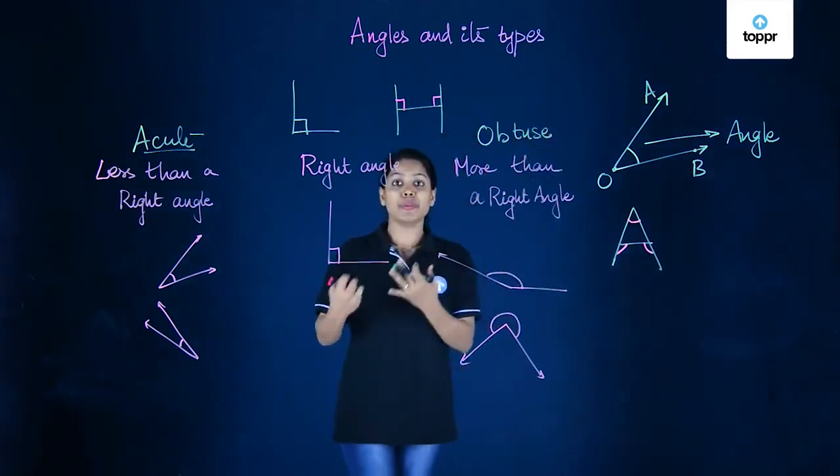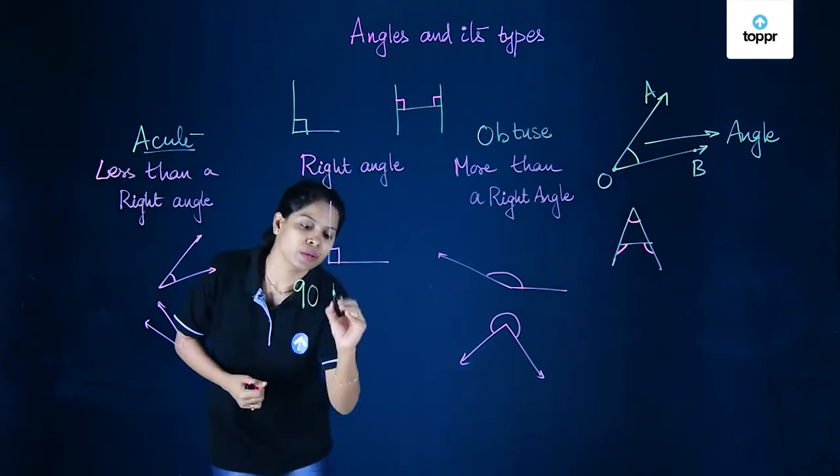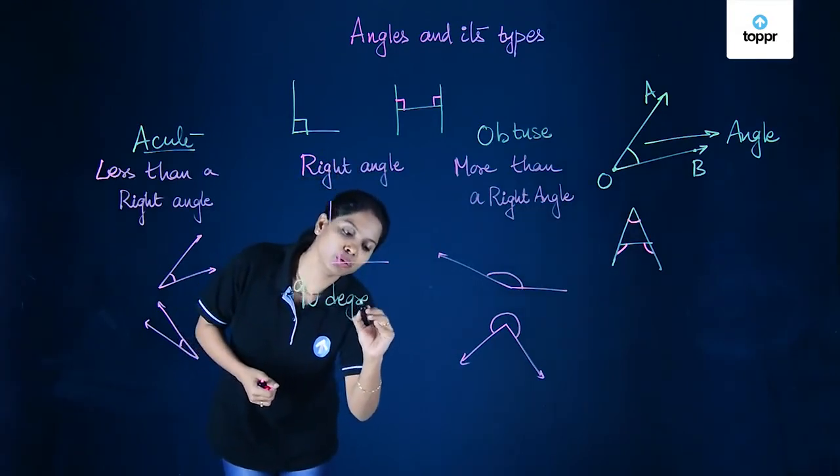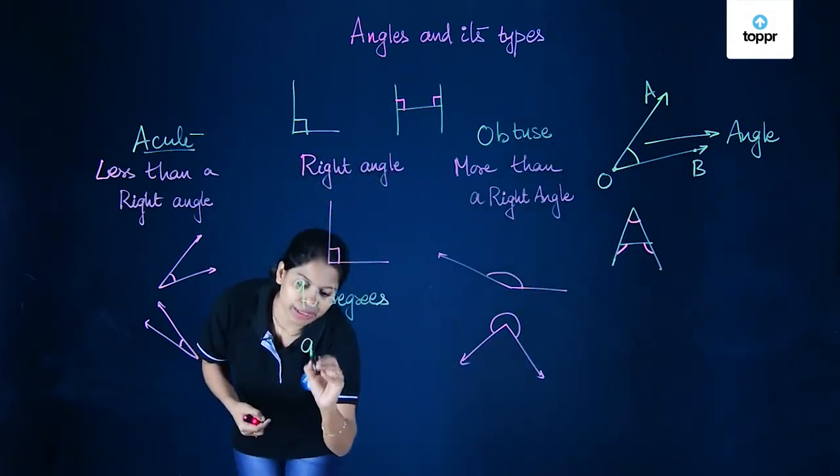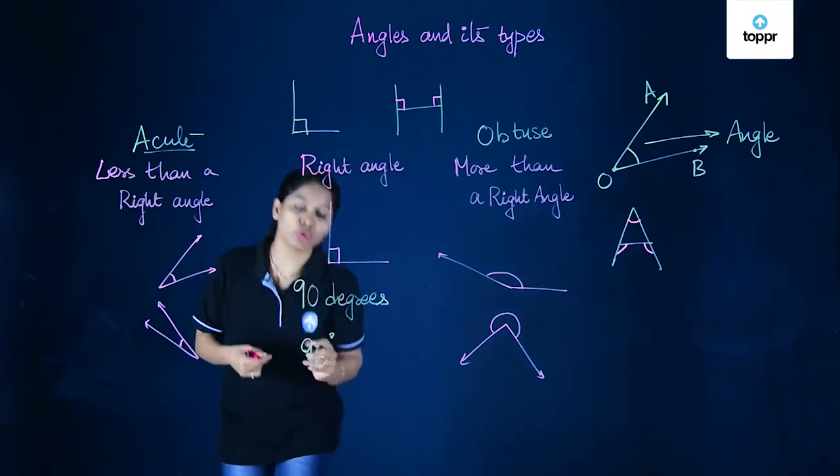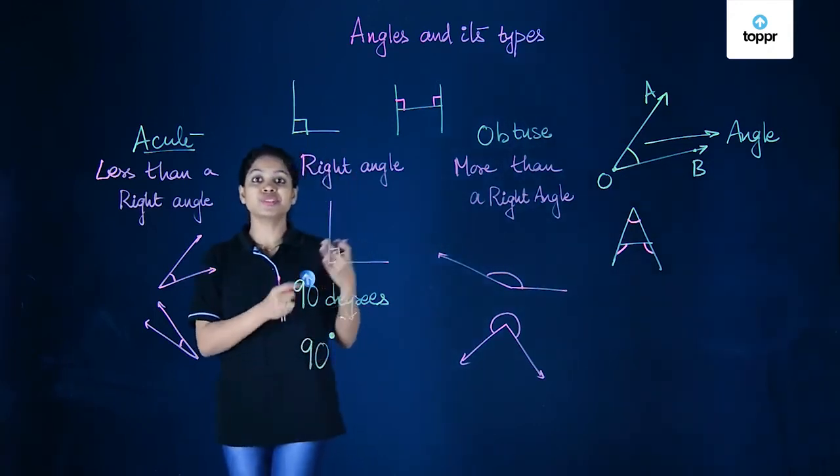Now we also have a measure. A right angle measures 90 degrees. Degree is a measurement of angle. So 90 degrees in short is written as 90 with a small dot over it. This small circle represents degrees.